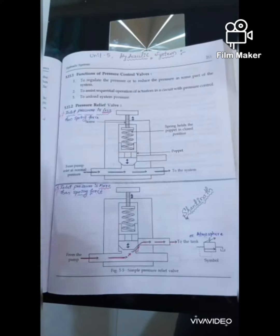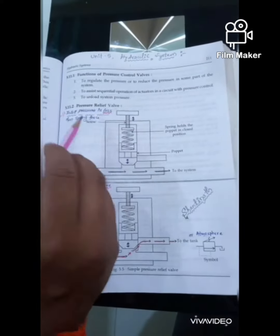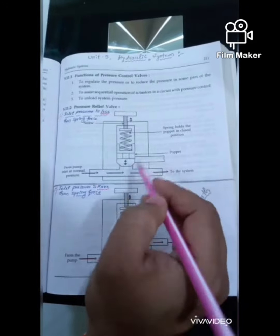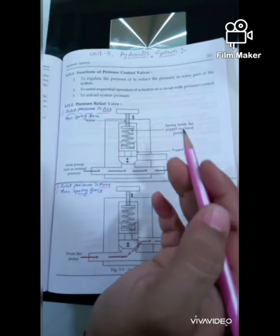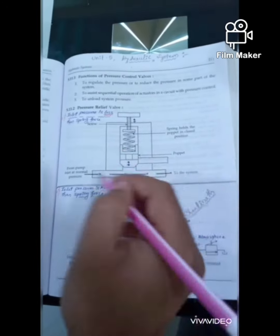This pressure relief valve, the definition is, it is a kind of closed valve which is used to limit the pressure or to prevent over pressurization.